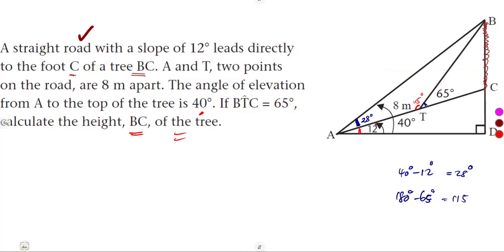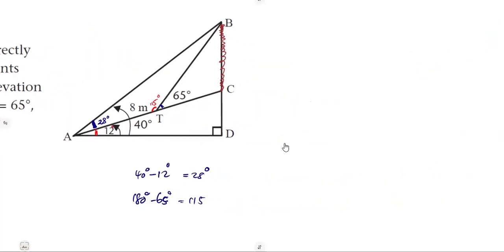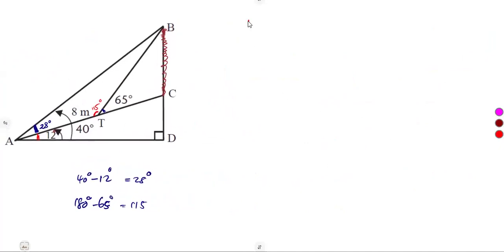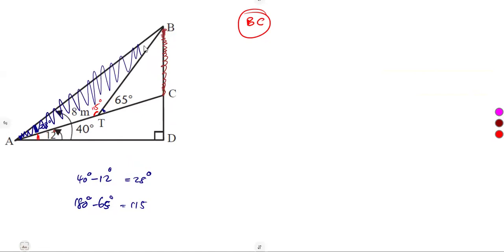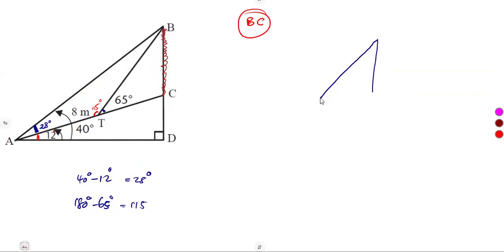We need to calculate the height of BC, which is the height of the tree. With knowledge of our triangles and the angles determined so far — 28 degrees at A and 115 degrees at T — we can work with triangle ABT, where we are given the length of eight meters.